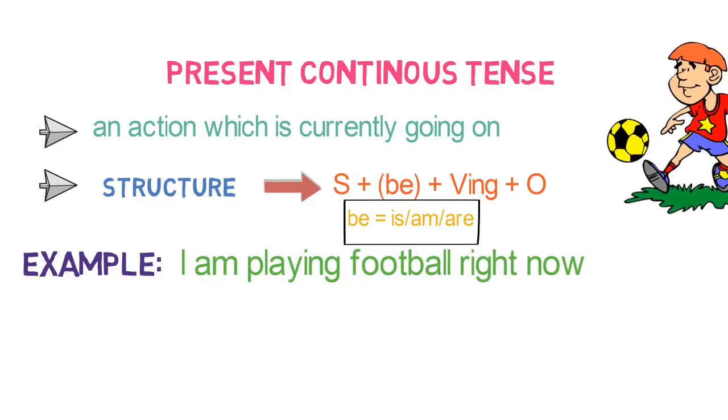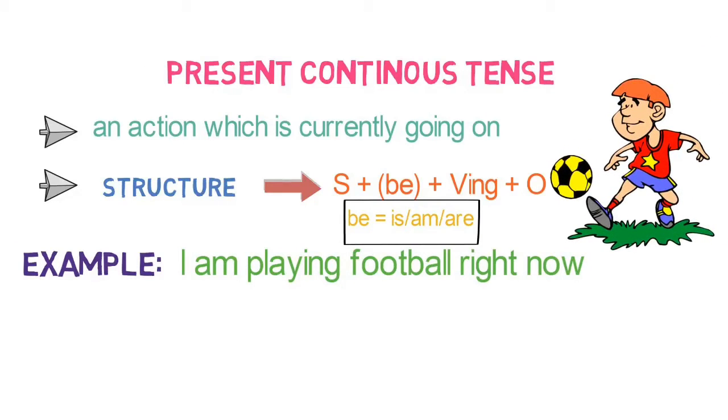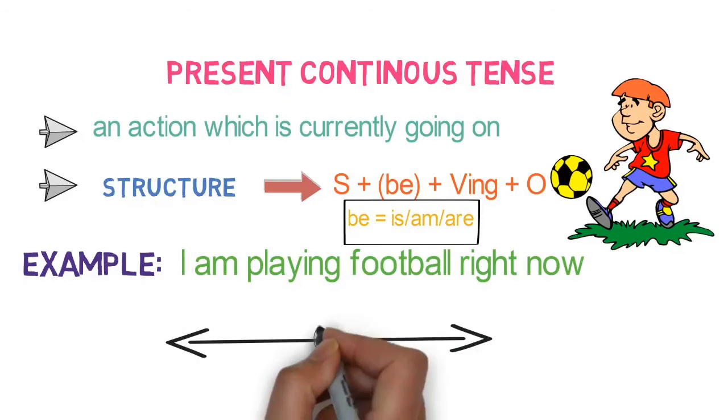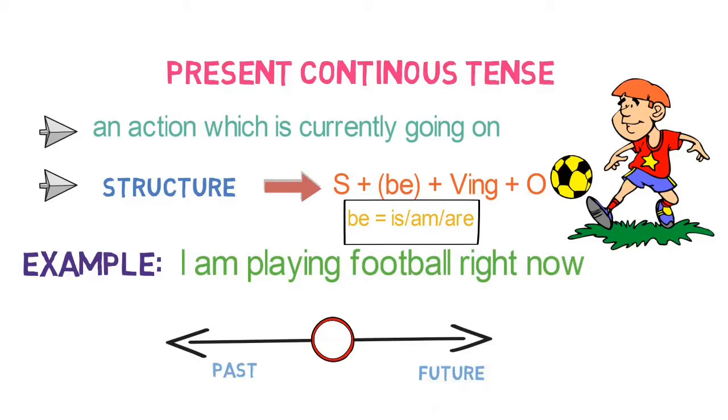Here my action of playing football is still going on and has not yet completed. So in the timeline it will appear exactly in the circle which indicates that the action is going on right now. Let's look into the next tense.